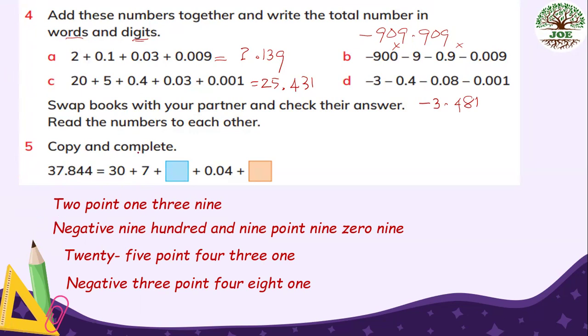Number five. Copy and complete. Is it easy? 37.844. 3 is 30. 7 is 7 ones. And here is 10 threes. This is 7.844. So it's 0.8. 100 is 0.04. The last one is 1,000. 0.004.